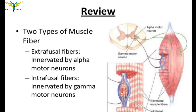In muscles there are two types of muscle fibers: extrafusal fibers and intrafusal fibers. The extrafusal fibers are innervated by alpha motor neurons, whereas the intrafusal fibers are innervated by gamma motor neurons.